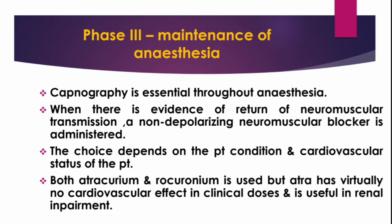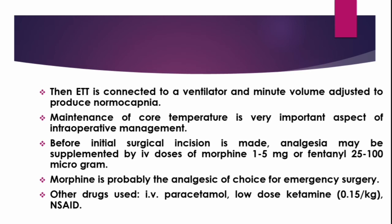The endotracheal tube is connected to a ventilator and minute volume adjusted to produce normocarbia. Maintenance of core body temperature is a very important aspect of intraoperative management. Before the initial surgical incision, analgesia may be supplemented by intravenous morphine at a dose of 1 to 5 mg, or fentanyl at a dose of 25 to 100 micrograms. Morphine is probably the analgesic of choice for emergency surgery. Other drugs include intravenous paracetamol, low-dose ketamine, or non-steroidal anti-inflammatory drugs.